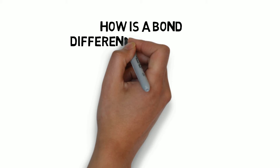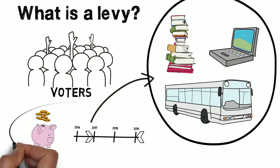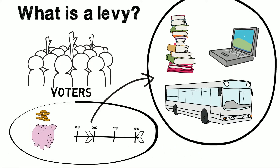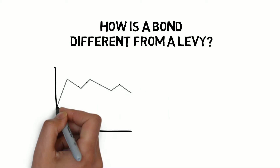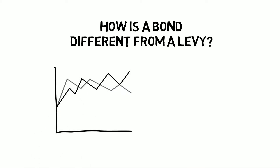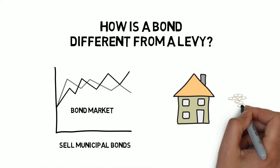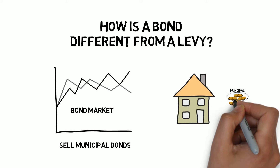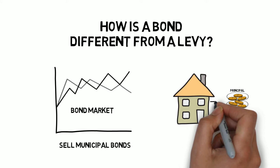How is a bond different from a levy? A levy allows a school district to collect a specific dollar amount through taxes for a set number of years. A bond allows a school district to finance the cost of projects through the bond market. When a school district places a bond measure before voters, it is asking for the authority to sell municipal bonds, and then pay the principal and interest on those bonds using money collected from property taxes.